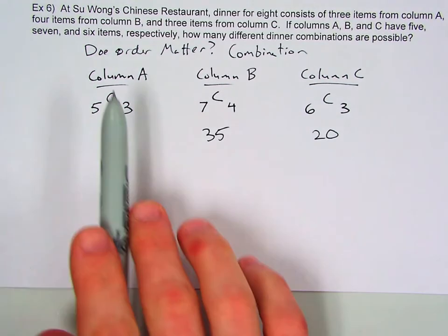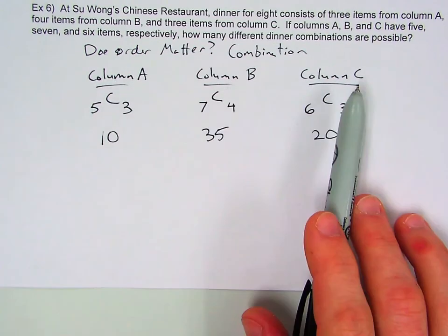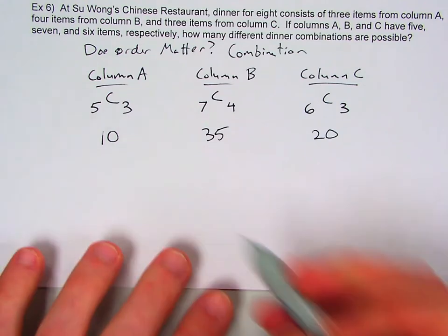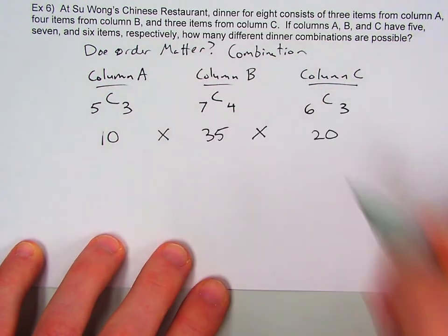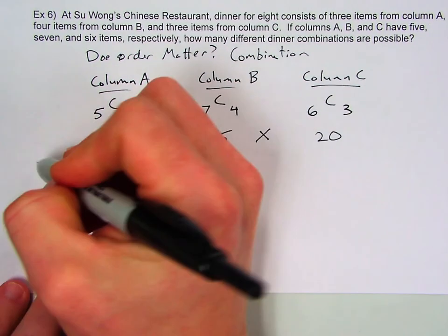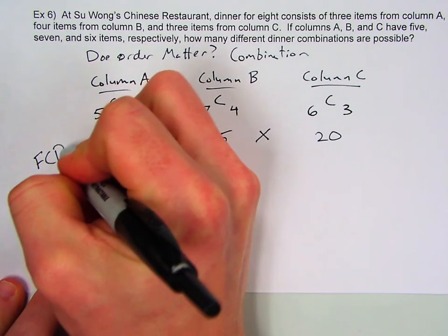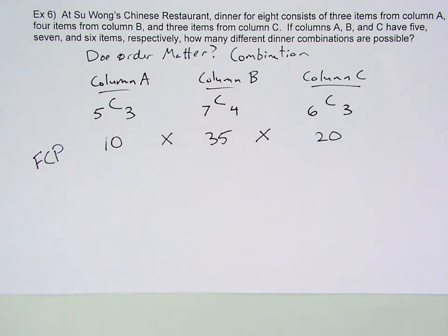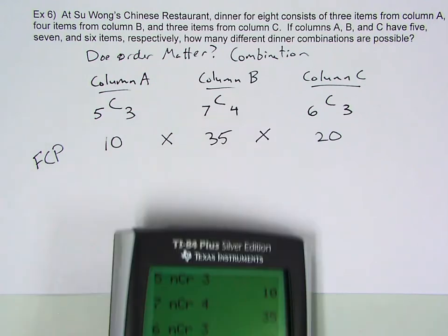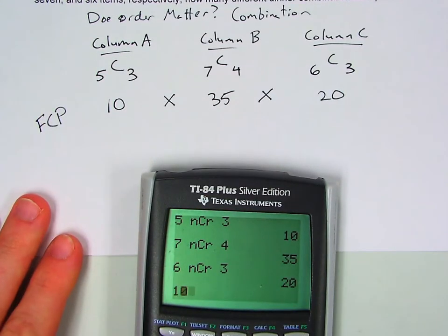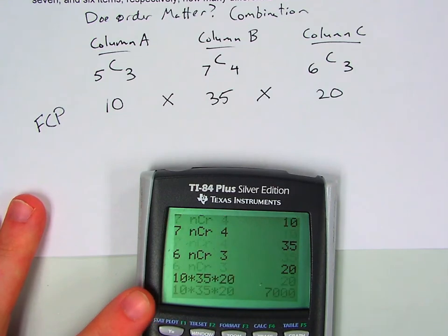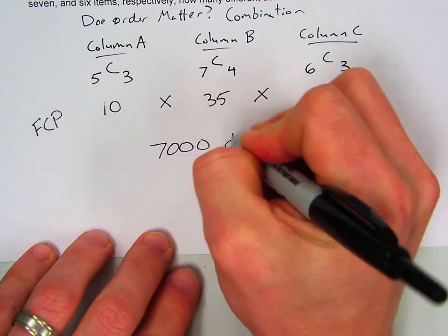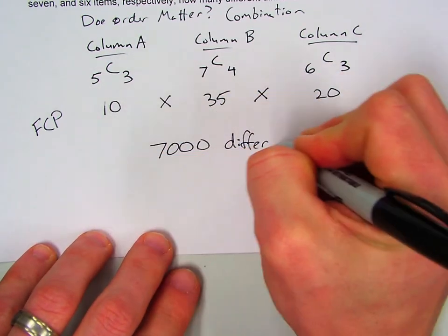Now in this example, we get to choose from column A and column B and column C. So to find our total number of combinations, each one of these can be paired up with each of the other ones. So this now becomes a fundamental counting principle problem. And so we're just going to multiply ten times thirty-five times twenty to get our answer. So there's a total of seven thousand different dinner combinations.